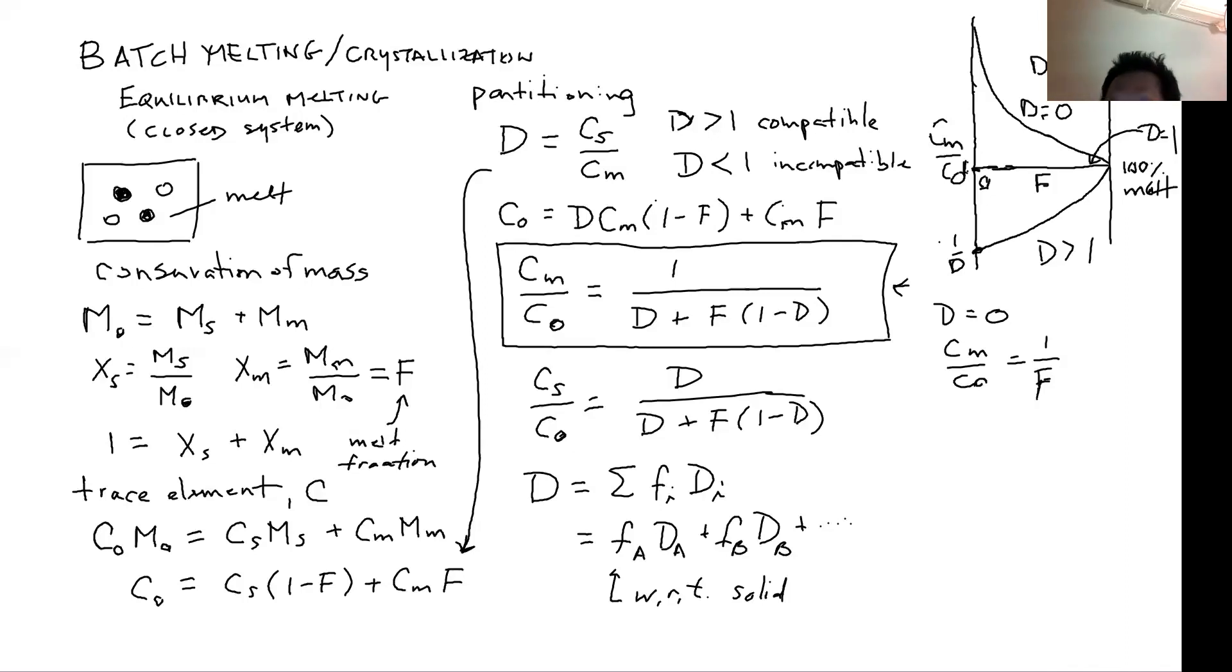Now the solids, if I were to plot the same solids on the same scale. Now Cs over C0. Which you'll get, and this being 1, this is f. You will get a curve like that for d greater than 1. And then like this, for d less than 1. So it's just the reverse.